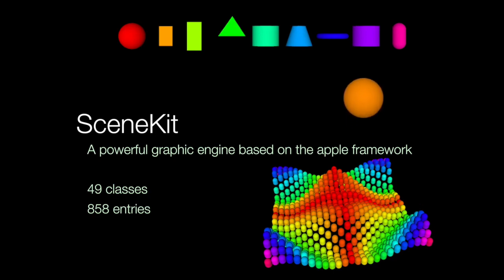But at first, what is SceneKit? SceneKit is a powerful graphics engine that is based on the Apple SceneKit framework, using the Metal engine for 3D graphics. The topic includes 49 classes and has 858 entries for the work with SceneKit.